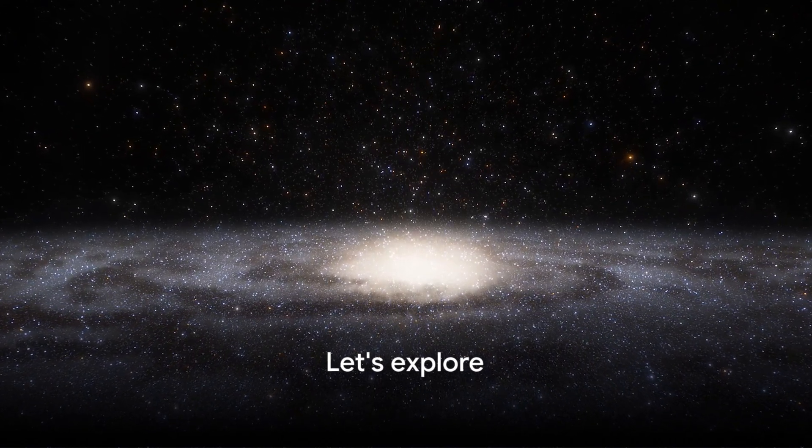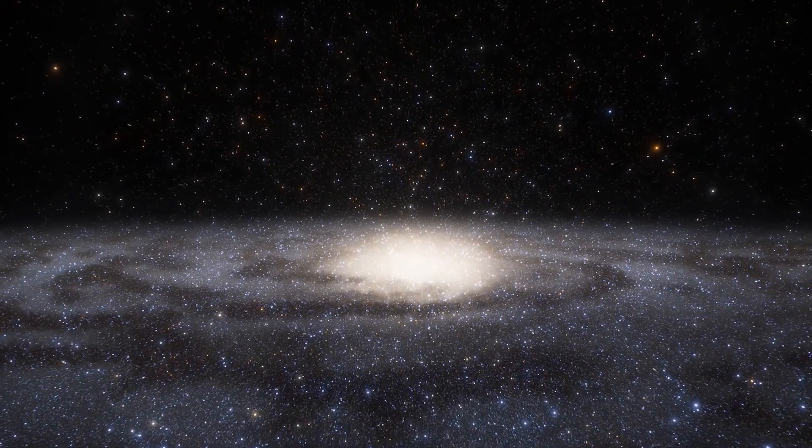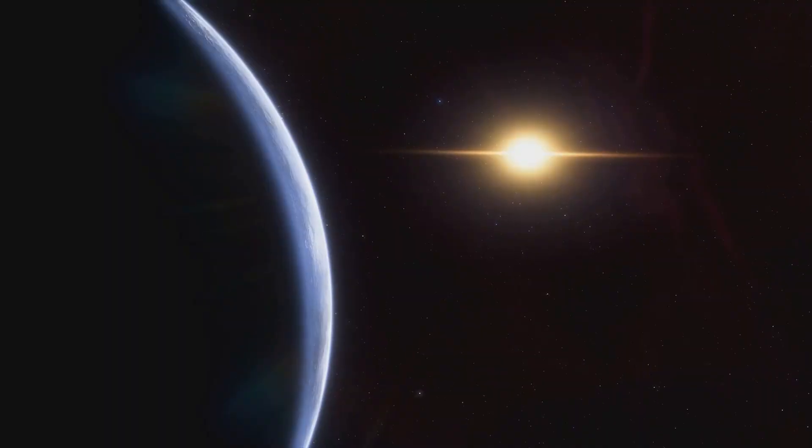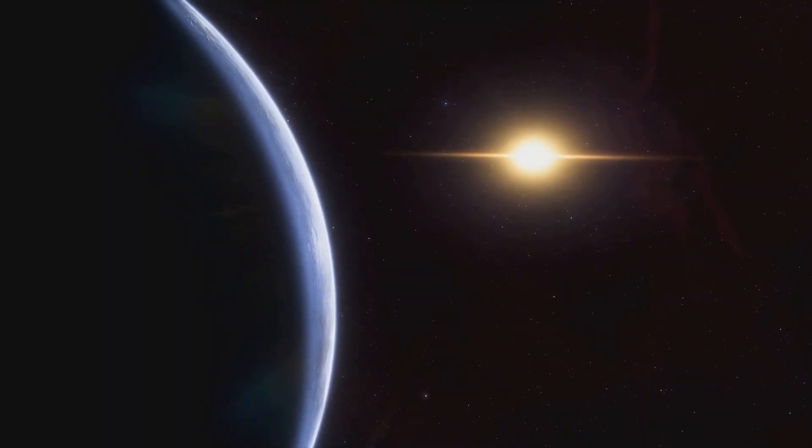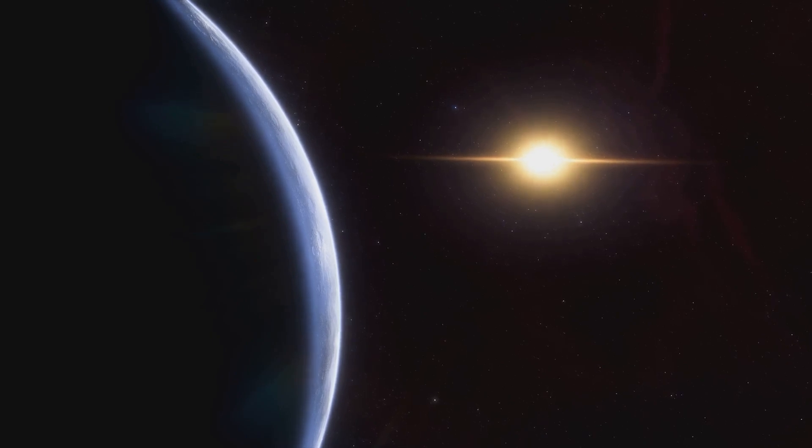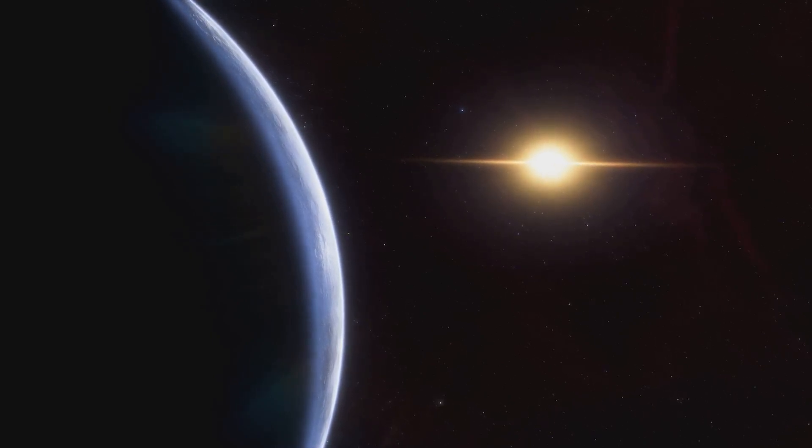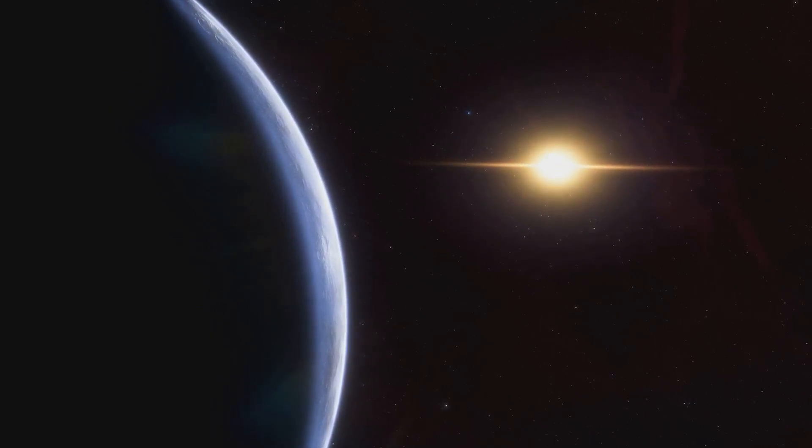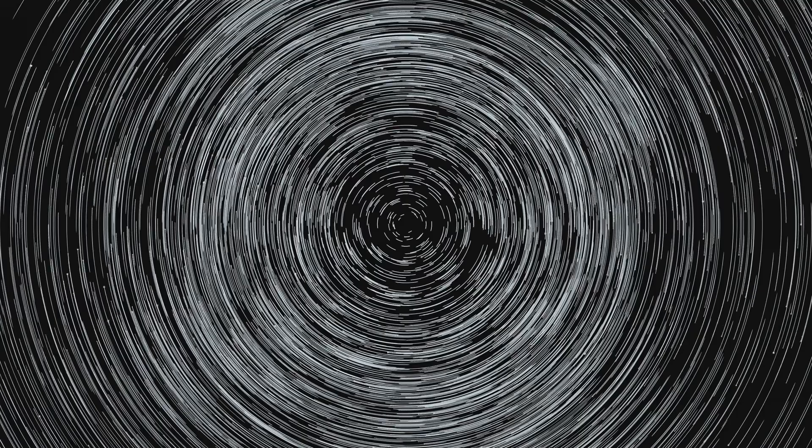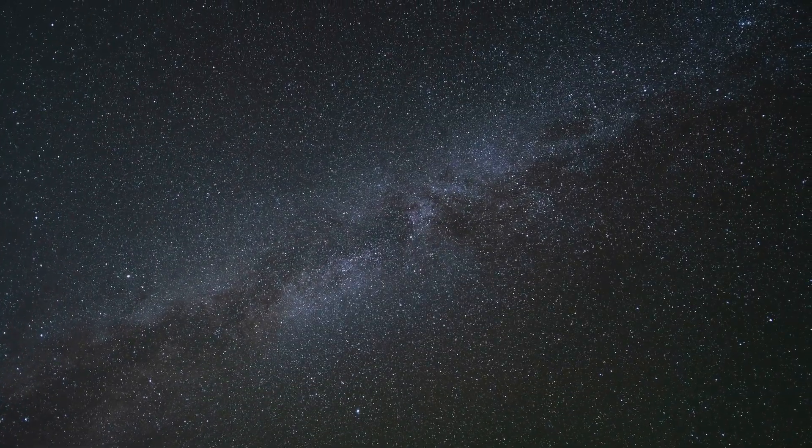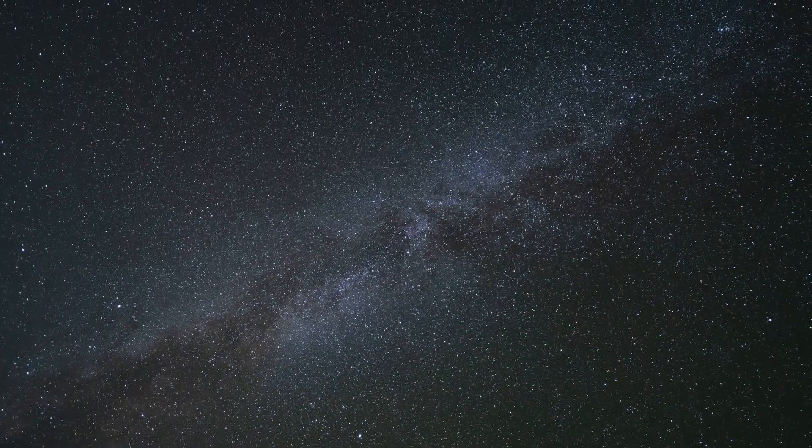Consider our closest stellar neighbor Proxima Centauri. It's about 4.2 light years away. This means the light we see from Proxima Centauri today actually left the star over four years ago. We're essentially looking into the past. But let's not stop there. Our Milky Way galaxy is about 100,000 light years across. Imagine the light from one end of the galaxy reaching the other. It would take 100,000 years. That's older than all of recorded human history.